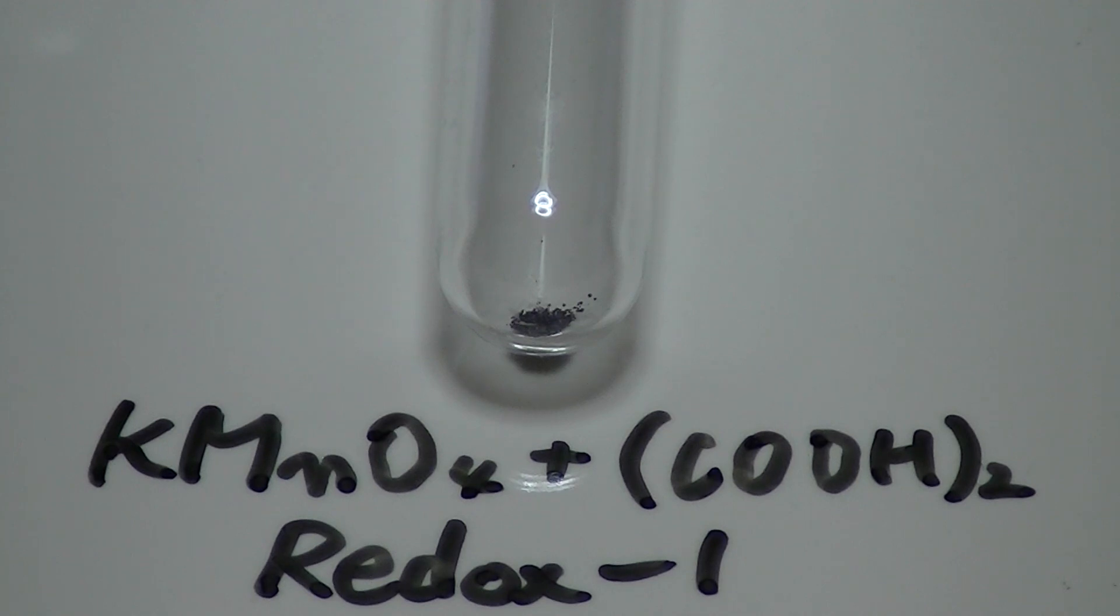There is small amount of potassium permanganate in the test tube. To make aqueous solution, I put some water into the tube.